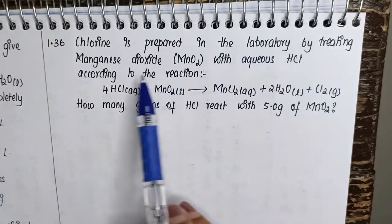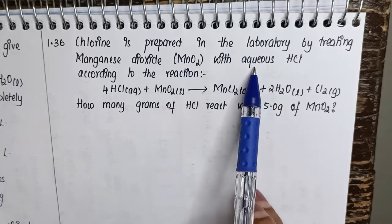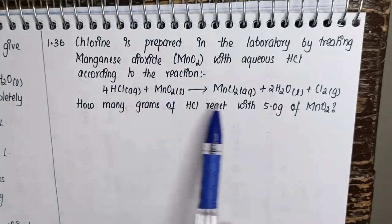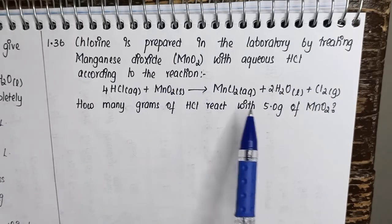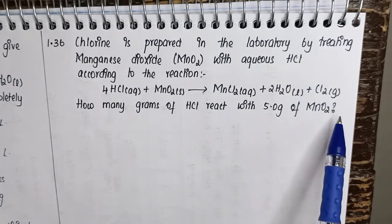Chlorine is prepared in the laboratory by treating manganese dioxide with aqueous HCl according to the reaction. So there is a balanced chemical equation given to us. How many grams of HCl will react with 5 grams of MnO2?